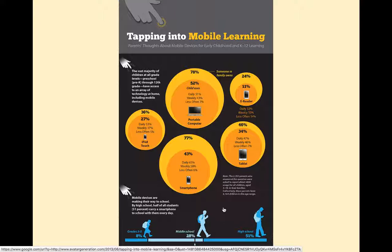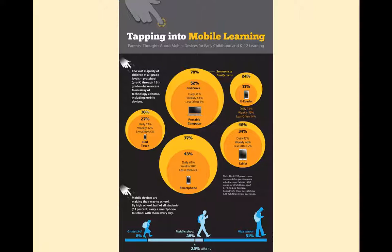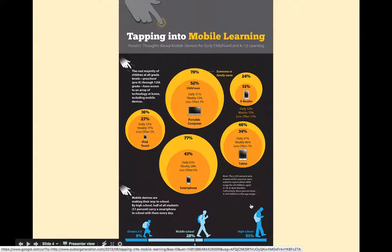You also find lots of general information about younger people and the technologies they use in schools. You have to be a little bit careful about this information because it's often quoted about countries like the US rather than other countries, and people tend to extrapolate that to many other countries where the situations are not quite the same. This link, if you click on it on the slides, takes you to a website about the kinds of access children have to different technologies in different phases of schooling. By the time children start going to high school, 51 percent are taking a phone to school with them.